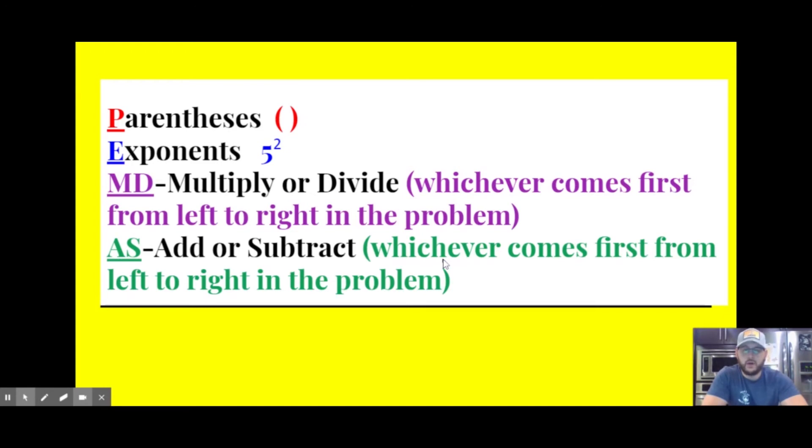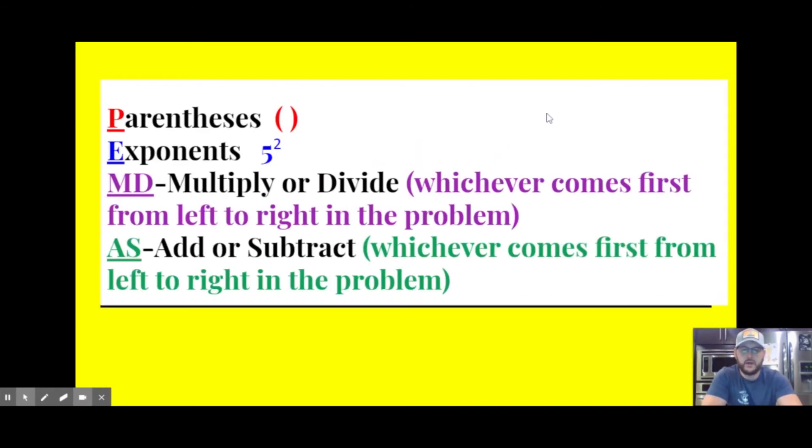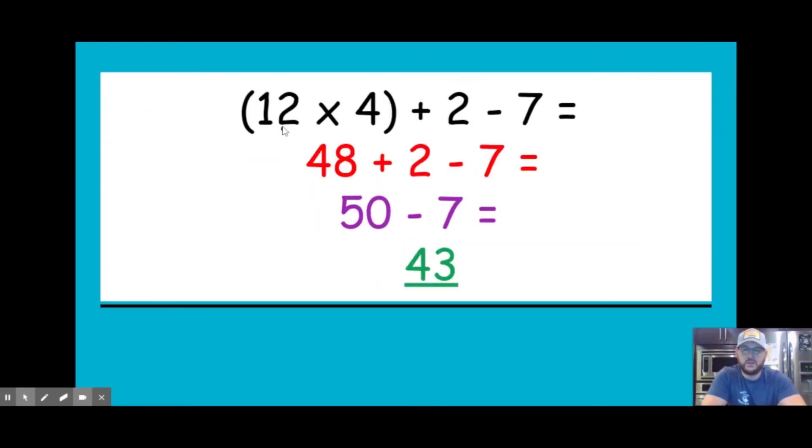So I'm going to do a quick model of an example, and then I'm going to give you a fun activity you can do with your family at home. So I have (12 × 4) + 2 - 7. And I remember that parentheses is my first analysis that I need to make. And I do see parentheses here. So 12 times 4 is what I must do first. 12 times 4 is 48. I'm going to bring the rest of the expression down. 48 + 2 - 7. I don't have any parentheses anymore.